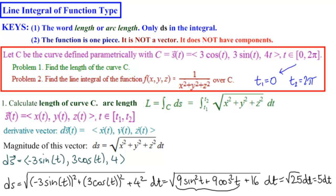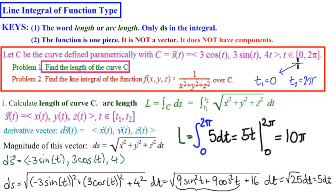So now we've got everything we need to find the arc length. L is equal to the integral from 0 to 2π, 5 dt, which equals 5t from 0 to 2π equal to 10π. So the length of the curve, this curve right here, is 10π.